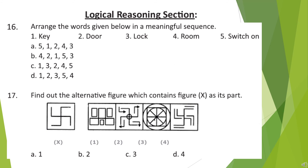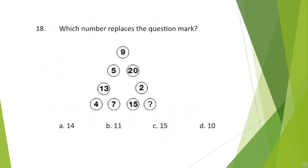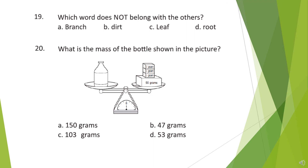Now let's start with the logical reasoning section. Question 16: Arrange the words given below in a meaningful sequence. Look at the options and choose your answer. Question 17: Find out the alternative figure which contains figure X as its part. Question 18: Which number replaces the question mark? Look at the figures and choose your answer. Question 19: Which word does not belong with the others? Question 20: What is the mass of the bottle shown in the picture? Look at the figure and choose your answer.